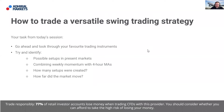For homework: go and look through your favorite trading instruments and try to identify possible setups in the present markets, combining weekly momentum with the four-hour moving averages. How many of those setups were created and how far did the market move? Were the waves created taking you towards the 261 target, or perhaps even the 423 target for very aggressive traders? For most of us, the 50% pullback entry and a 261 target will suffice.